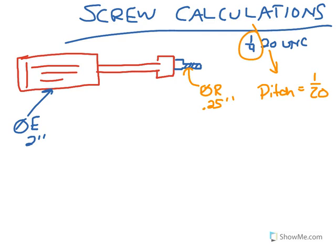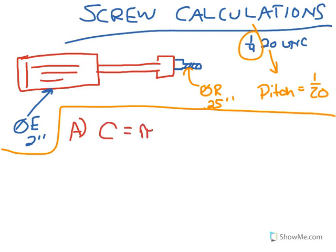So first question, part A. Determine the circumference where the effort is applied. Circumference is pi times the diameter, or 2 times the radius. The diameter is 2 inches. That would give us a circumference of 3.14 inches.